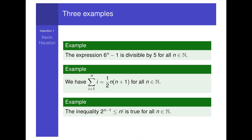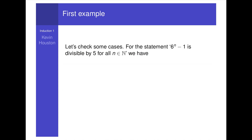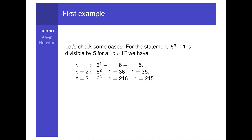After reading these, did you behave like a mathematician — stop the video and try out a few cases to check that the statements were at least plausible? Let's check some cases. For the statement 6 to the power n minus 1 is divisible by 5: when n equals 1, we get 6 minus 1 which is 5, obviously divisible by 5. For n equals 2, we get 36 minus 1 which is 35, also divisible by 5. For n equals 3, we get 215, also divisible by 5. For n equals 10, after calculation we get a number ending in 5, which is indeed divisible by 5. These cases indicate the statement is reasonable; we haven't found a counterexample yet.